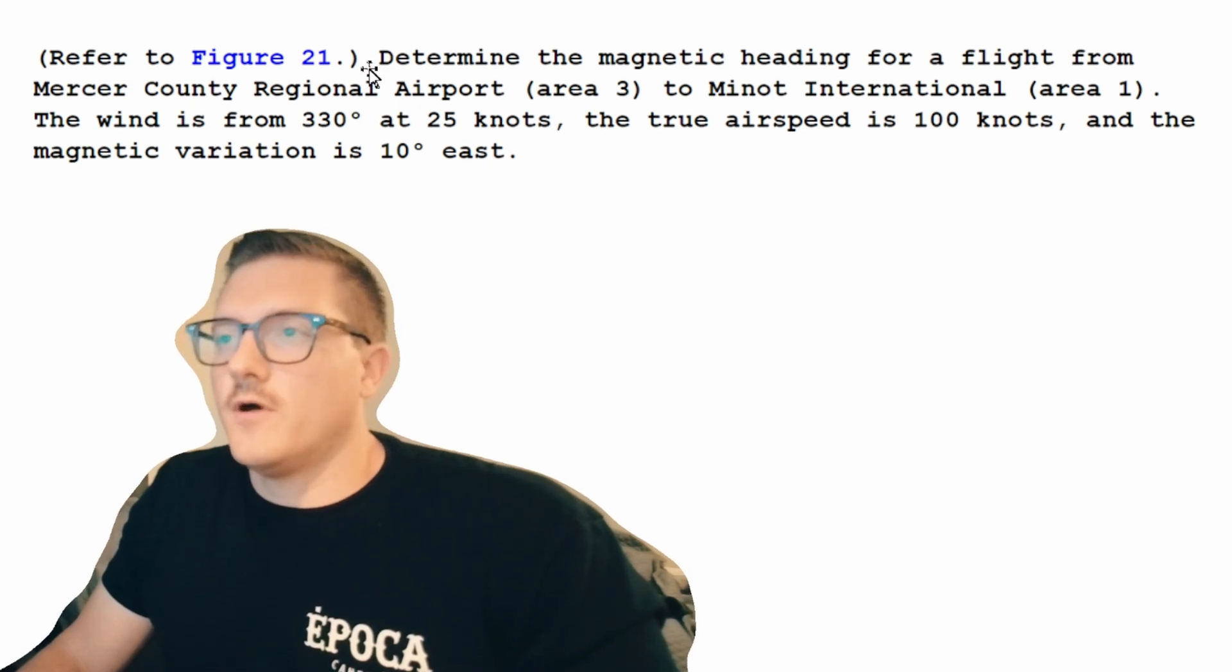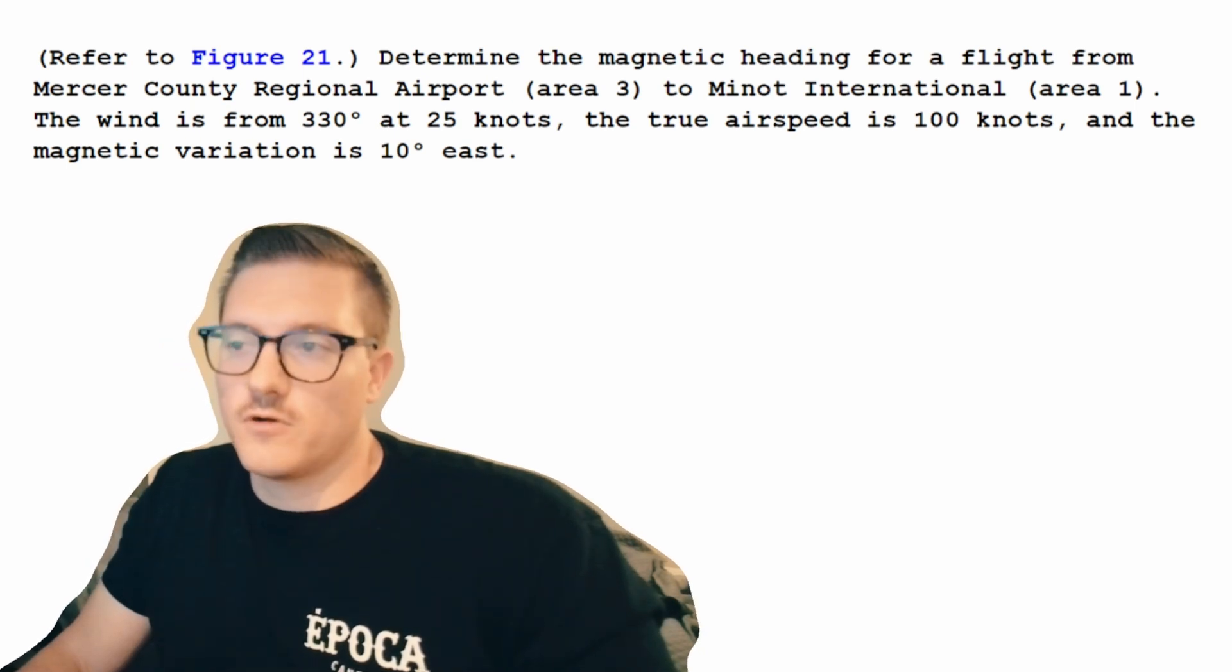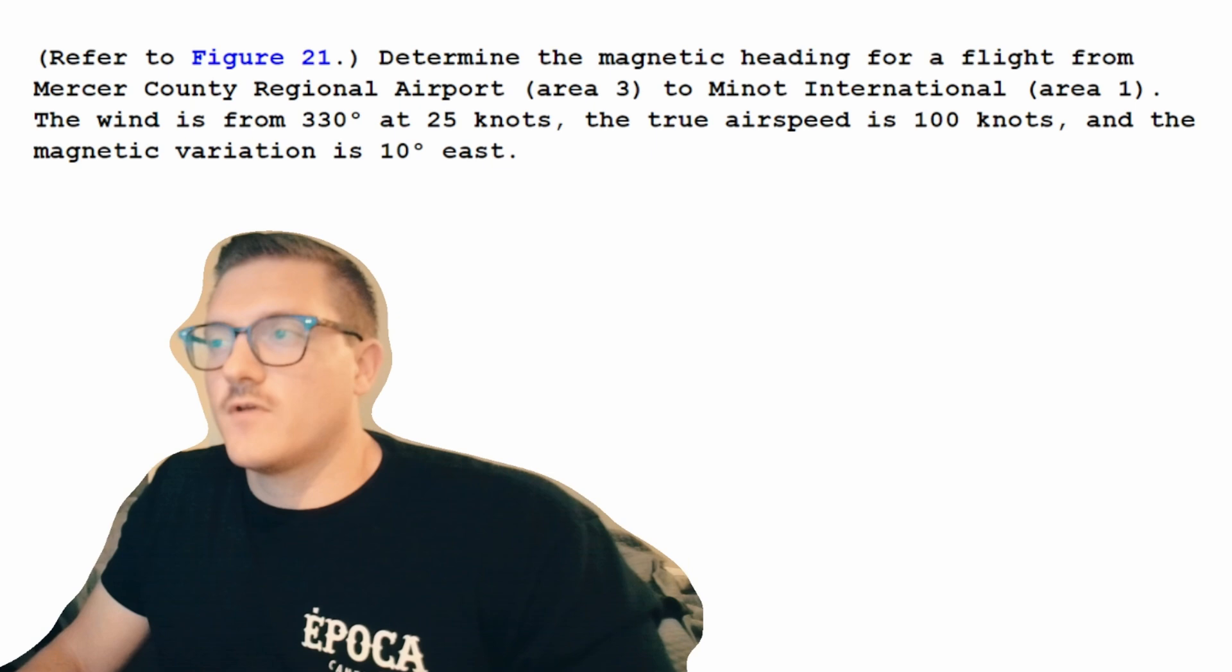Looking back at figure 21, determine the magnetic heading for a flight from Mercer County Regional Airport Area 3 to Minot International Area 1. The wind is from 330 degrees at 25 knots. True airspeed is at 100 knots and the magnetic variation is 10 degrees east. So a bit of this is going to be the same. We're going to figure out a true course, adjust for magnetic variation to get our magnetic heading, but we're also going to take into consideration the wind.